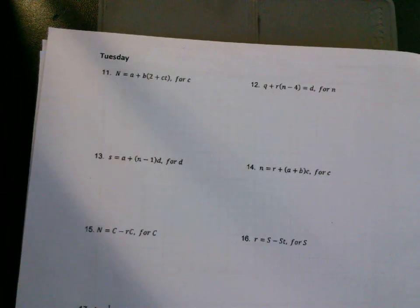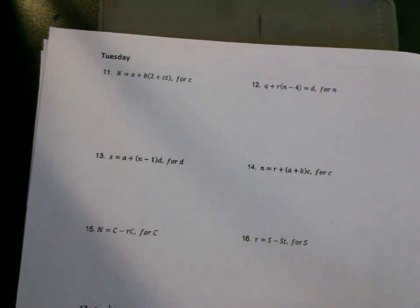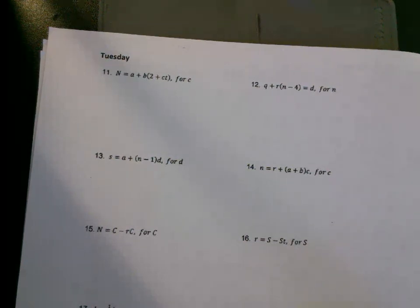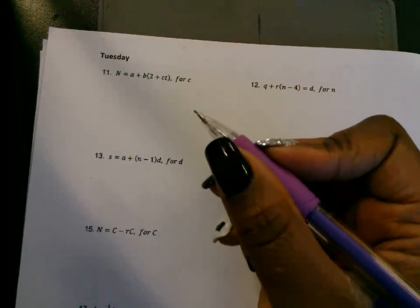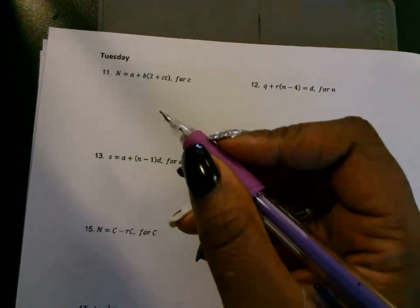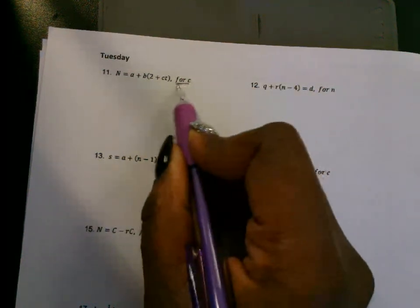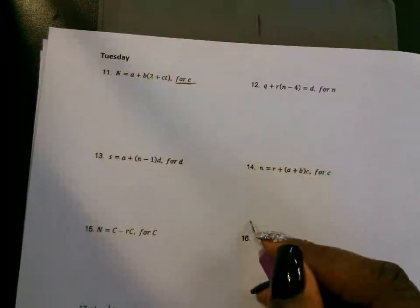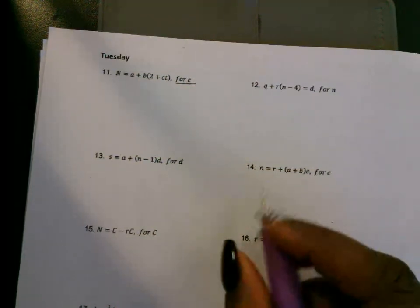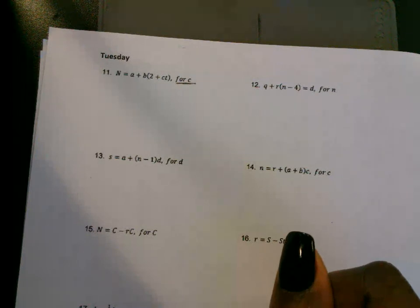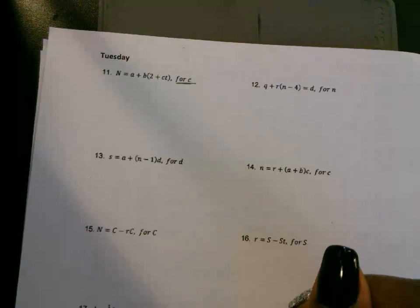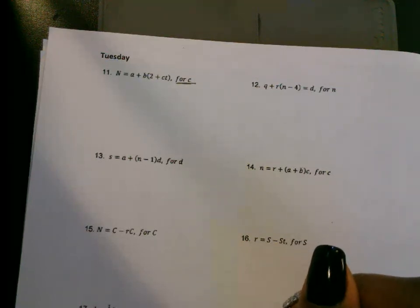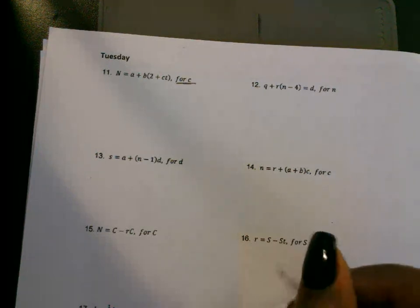Hi, Math 1. This is your homework video for Tuesday. We're still working on literal equations. Remember, yesterday I told you that a literal equation is where you have more than one variable within an equation. When you're solving for a literal equation, they'll tell you what letter you're solving for. This is the letter you have to isolate. You isolate the variable by using inverse operations to remove everything on the same side as the letter. Your whole objective is to get that variable by itself. So let's look at this first one here.